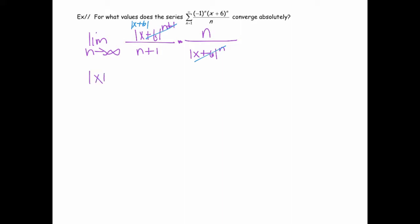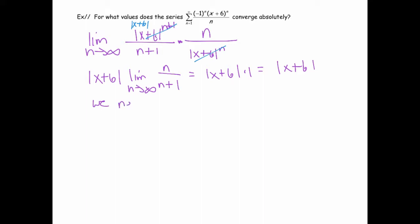I can take that out of the limit, and I've got the limit as n goes to infinity of n over n+1, which equals 1. So the ratio test resulted in the absolute value of x plus 6. For it to converge, we need that to be less than 1, which implies negative 1 is less than x plus 6, which is less than 1. Subtracting 6 from both sides gives us this interval of convergence.